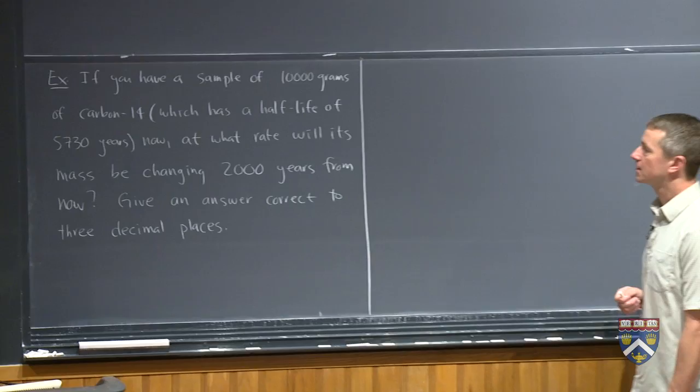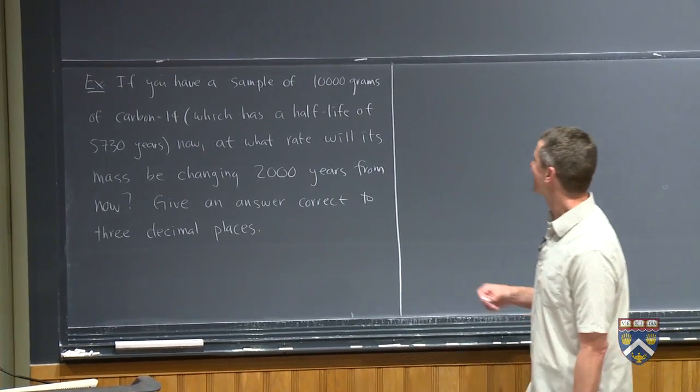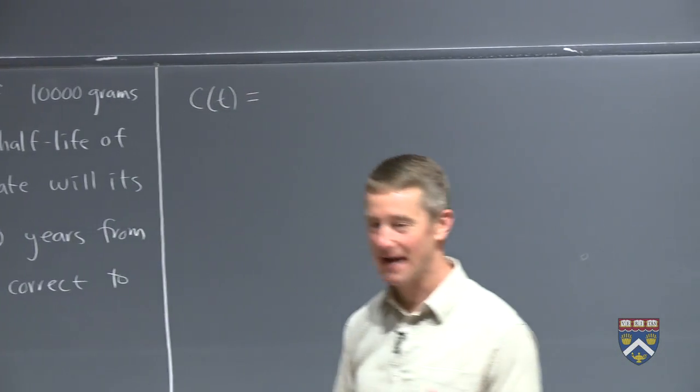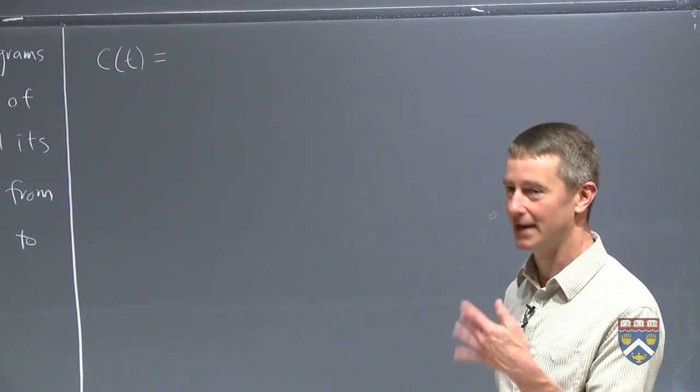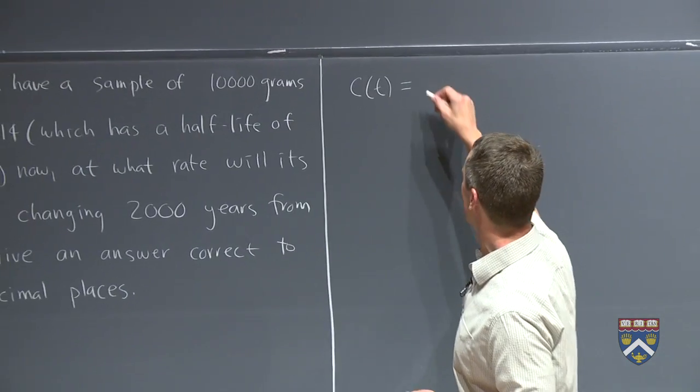Well, what do we need to do first? We need something to take the derivative of, so we must need an equation. So let's write our formula for C(t). This is one of these half-life problems, so it's an exponential function. So it takes the form P_0 times a to the t. P_0 is the amount at time zero, so that's our 10,000.